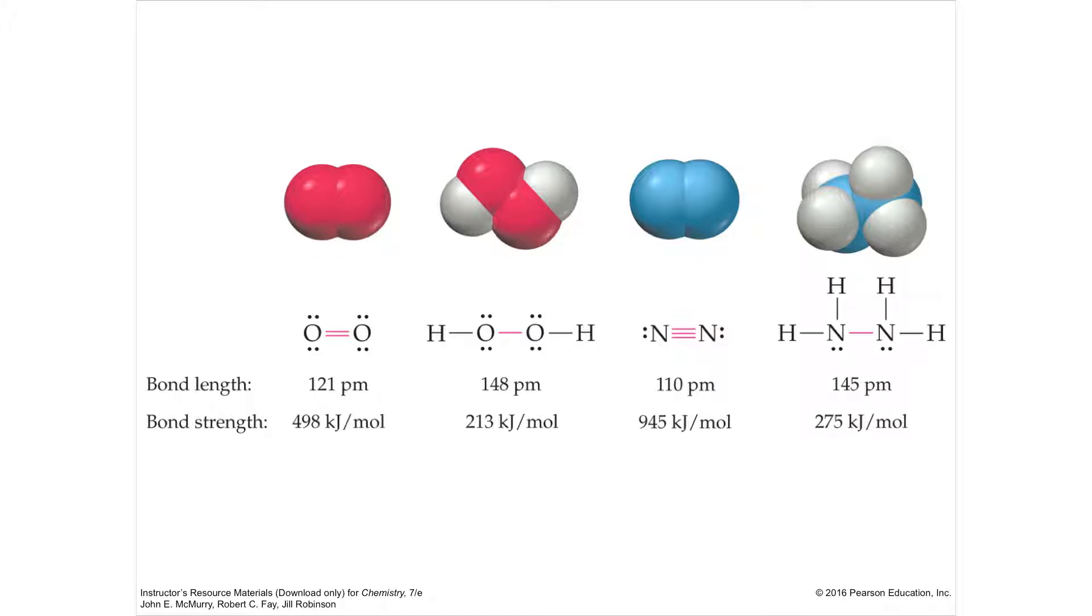Whereas you have 148 picometers for a single bond in oxygen, if you have a double bond in oxygen, it's only 121. So it's a lot shorter because it's a stronger bond. They're holding each other tighter. When you get into a triple bond, it's even less.